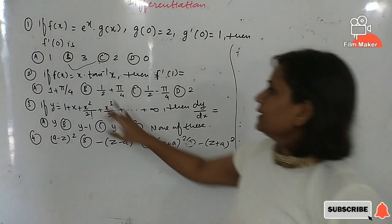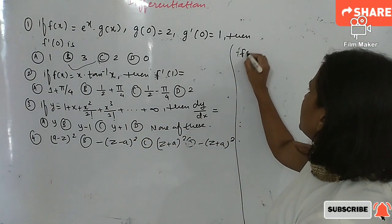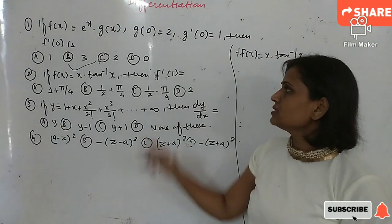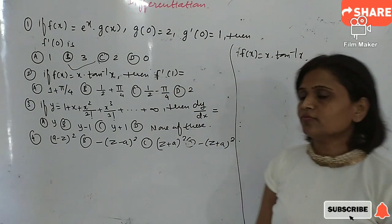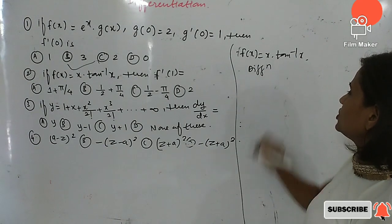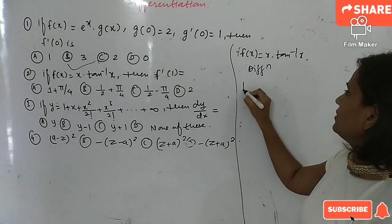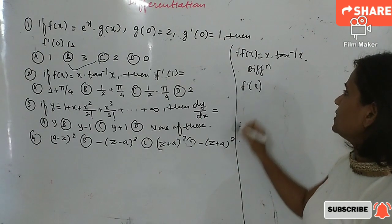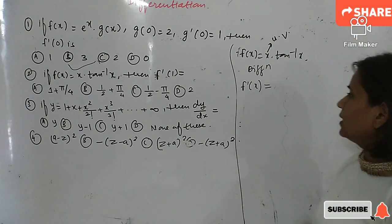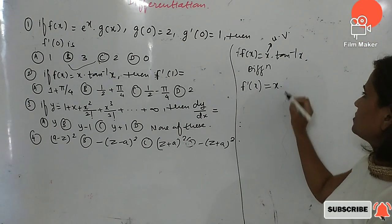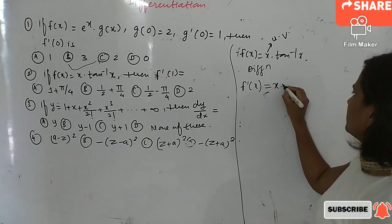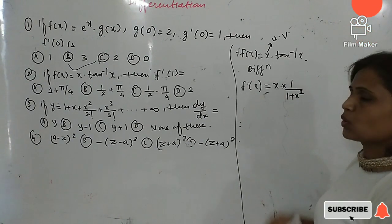Next question: the function is f(x) = x · tan⁻¹(x), and we have to find the value of f'(1). Since f' means derivative, first differentiate with respect to x. Here again two functions are multiplied, so apply the u·v rule. The first function x is constant, and the derivative of tan⁻¹(x) is 1 upon (1 + x²).